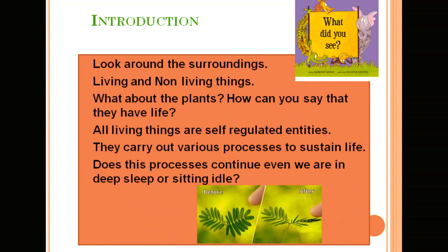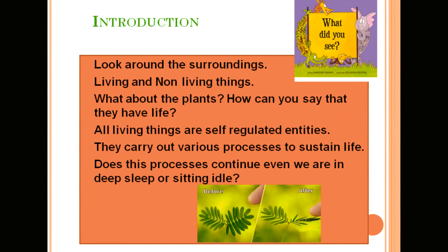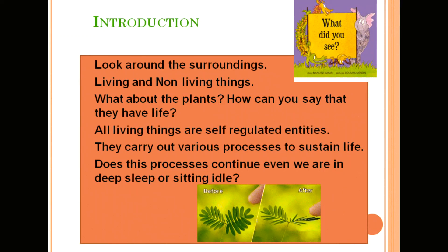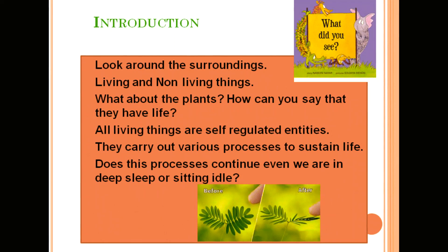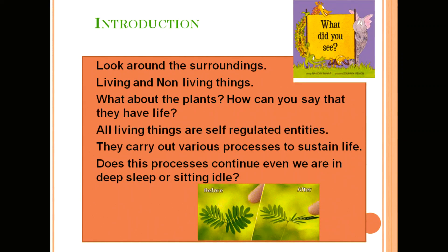Plants grow, they need food, and they even show movements in different parts of their body. All living beings are self-regulated entities. They carry out various processes essential for the maintenance of life. These living beings are called organisms and their activities are known as life processes — that means all the activities that help in maintaining the different body functions of living organisms are called life processes.